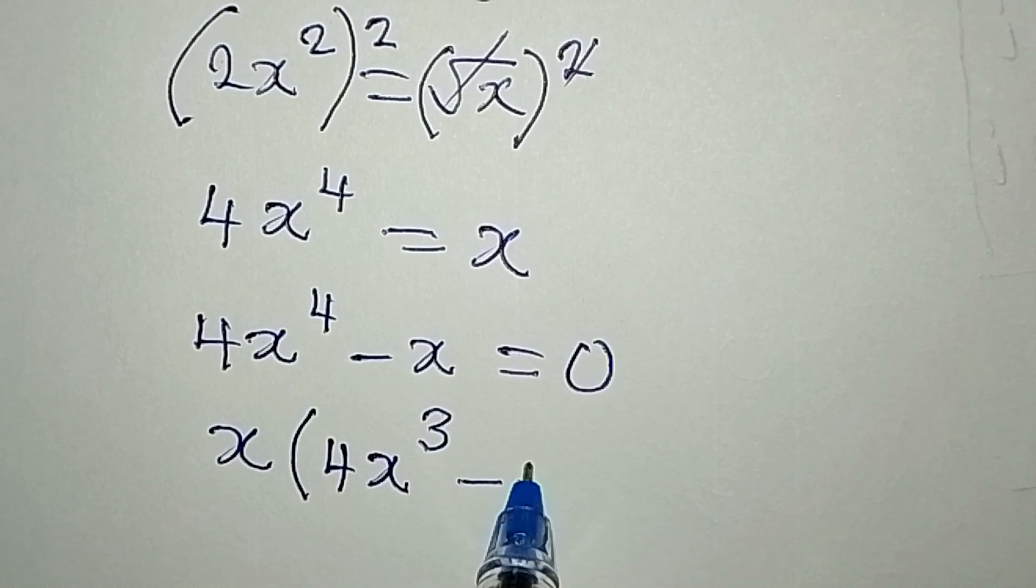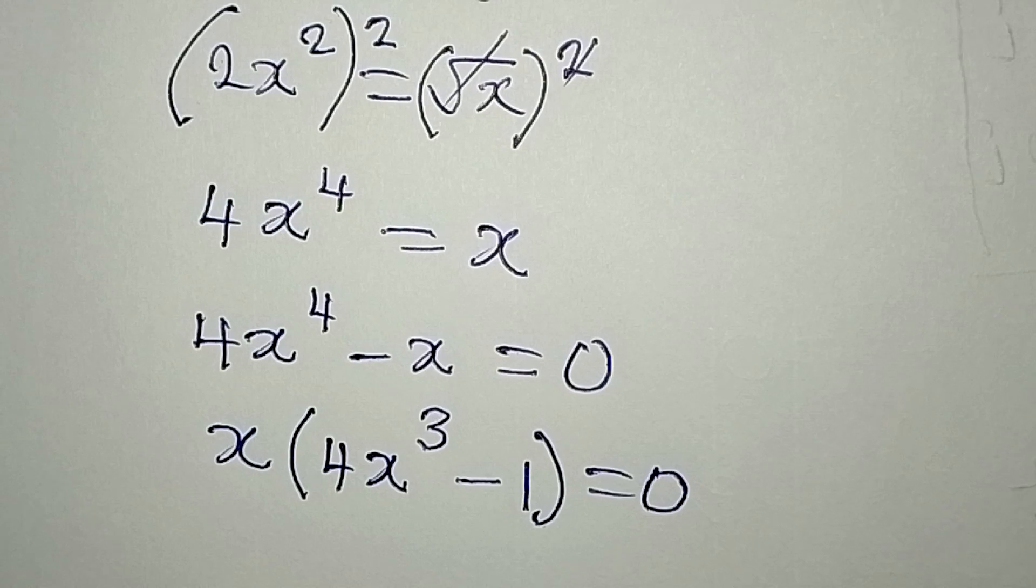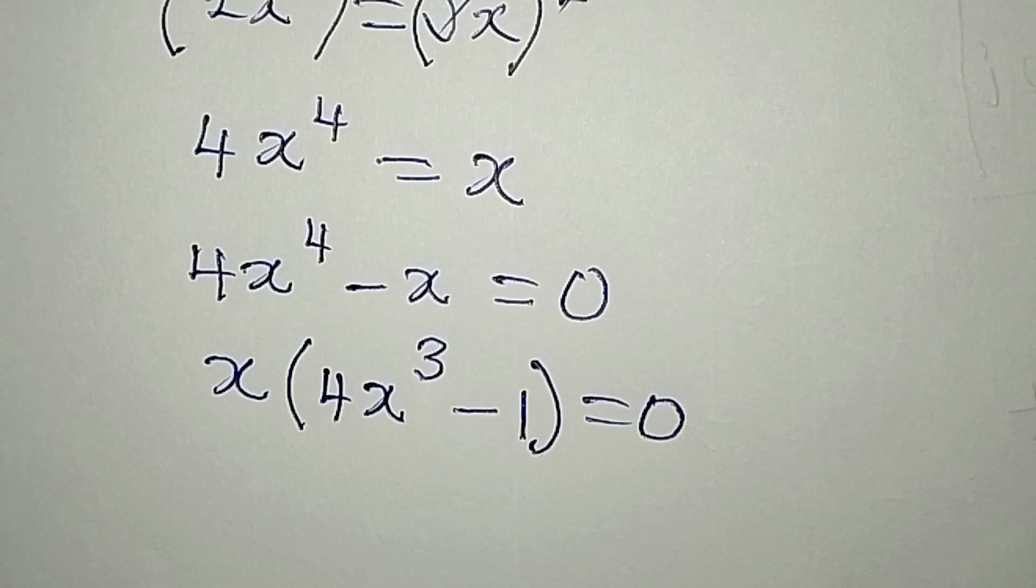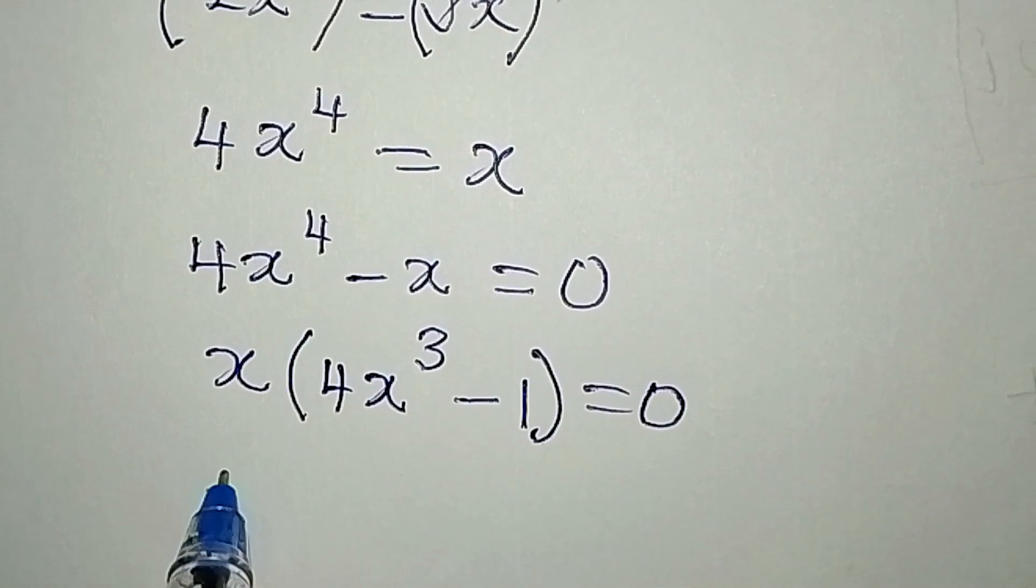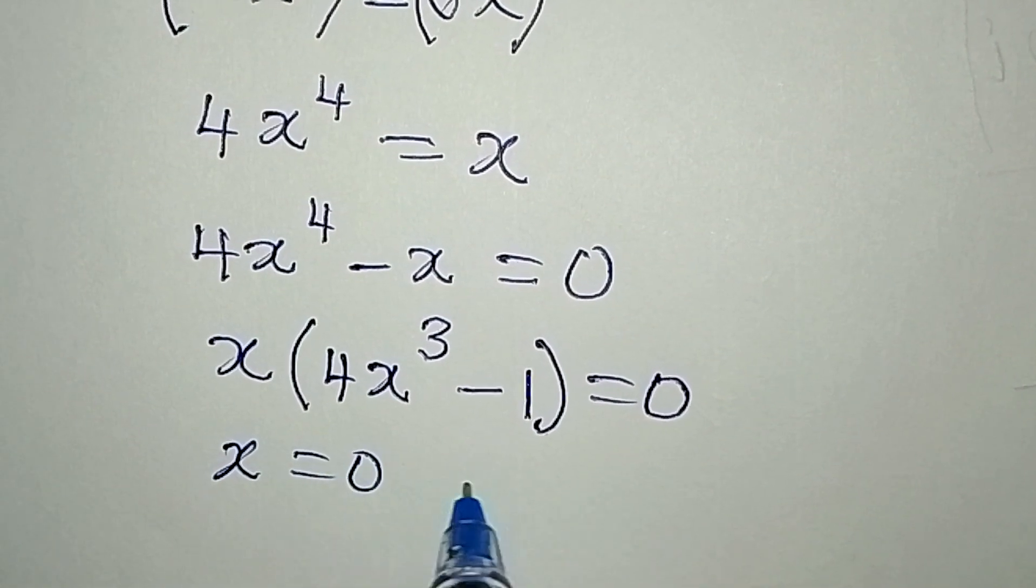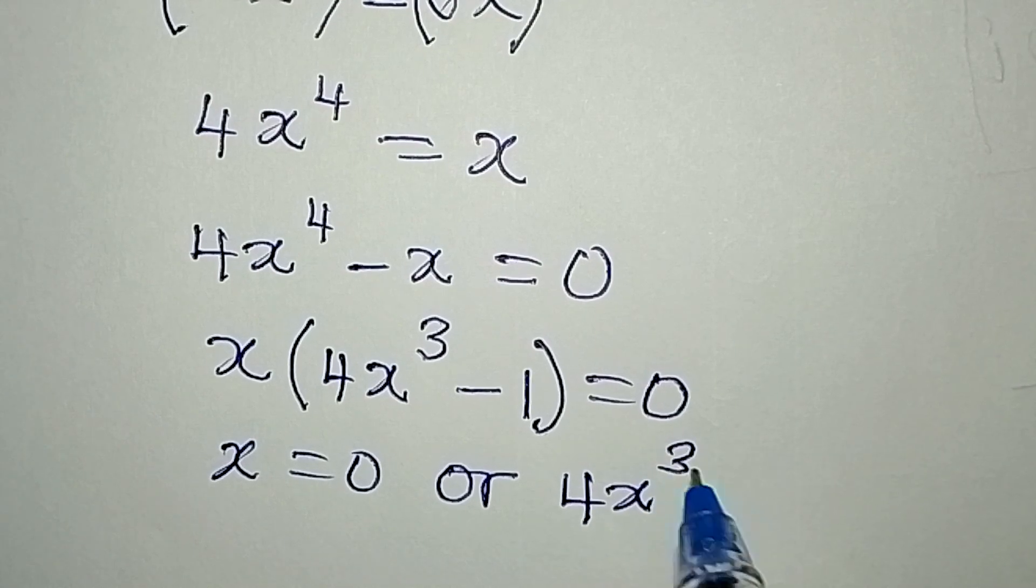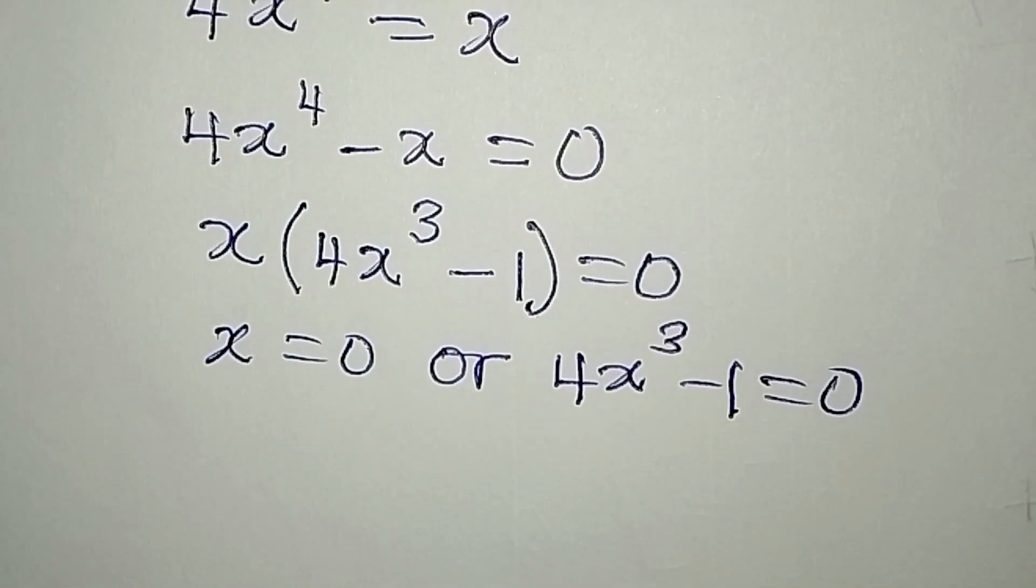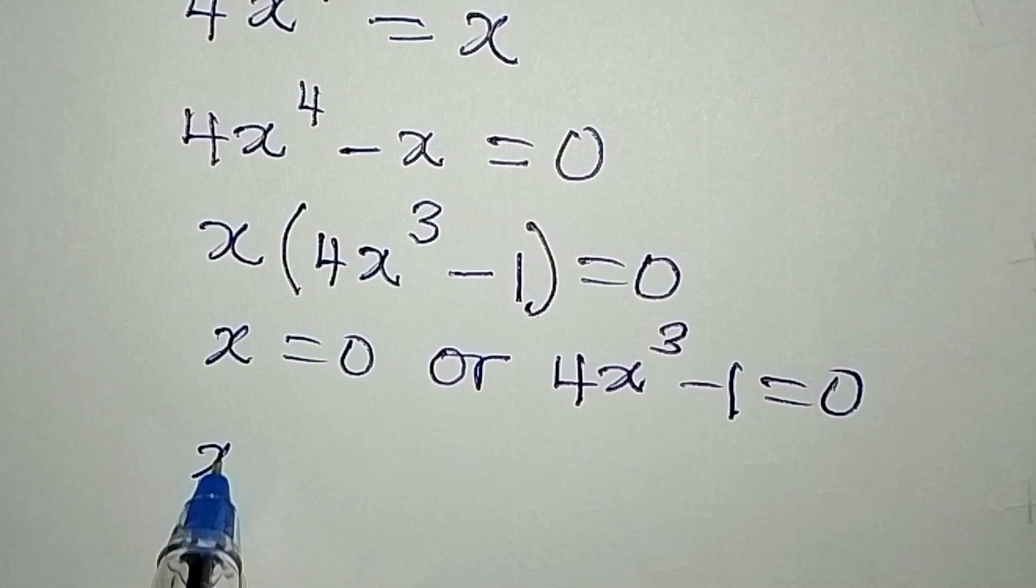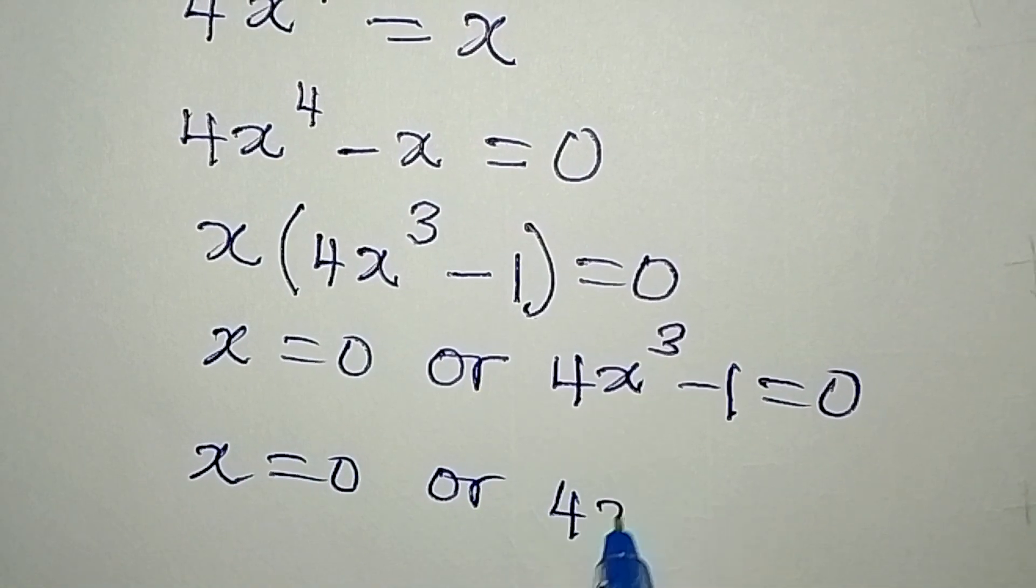From here we can apply zero product rule, and that says x is equal to zero, or 4x to the power of 3 minus 1 equals 0. So from here we already have our x to be zero.